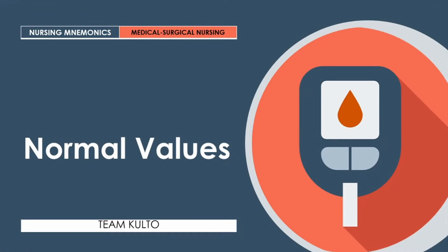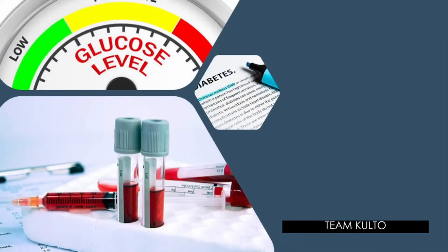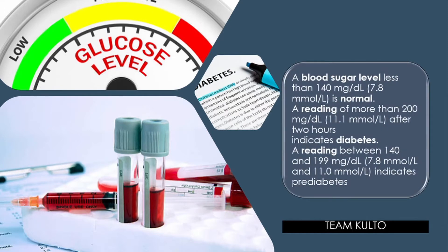How do we know a patient has hypoglycemia? We need to know the normal values. A blood sugar level of less than 140 mg per deciliter is normal. A reading of more than 200 mg per deciliter after 2 hours indicates diabetes. A reading between 140 and 199 mg per deciliter indicates pre-diabetes. Remember that 140 is your key standard numerical value.